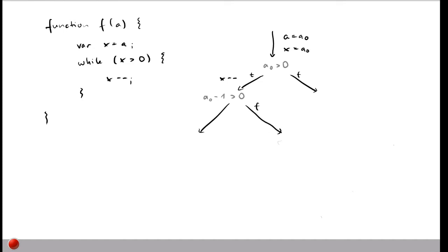And then again we can have two possible outcomes, true and false. If it's false we are done. But if the outcome is true we will again execute x minus minus and then reach the loop condition another time where we are now checking whether a0 minus 2 is larger than 0. And then this goes on and on like this because we can have infinitely many more of these executions because we simply do not know what the initial value of a is.